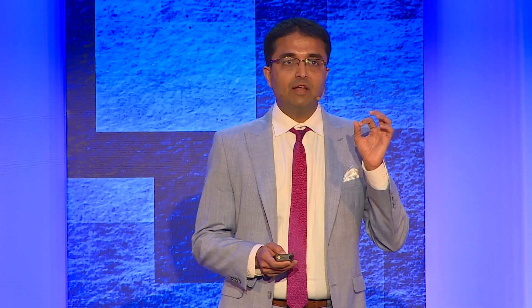We get a histogram, a spectrum, as shown in green. And finally, a score based on mathematical equations which tells you how complex, how severe your cancer is. This is TEXTRAD — Texture Analysis of Radiological Images.